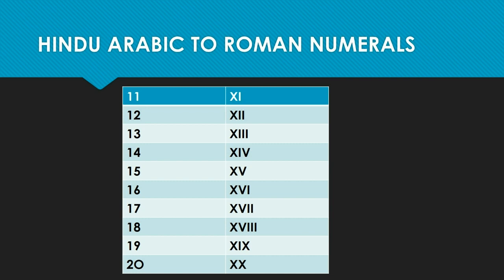Likewise we have the Roman numerals from eleven to twenty: 11, 12, 13, 14, 15, 16, 17, 18, 19, and 20. Since X is ten, twenty will be double X — that is XX. The same rule applies for the next numbers.